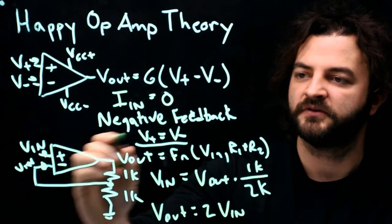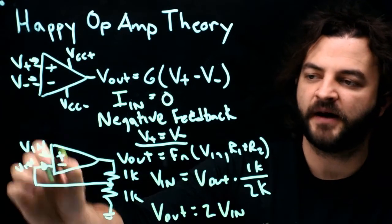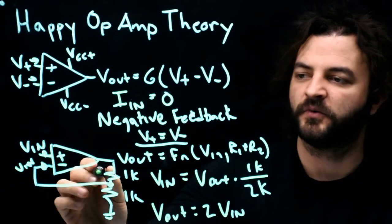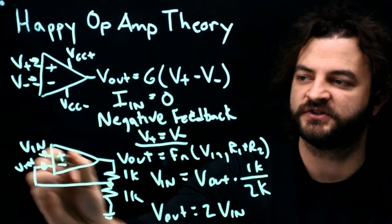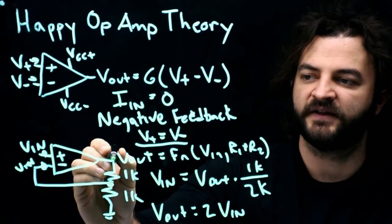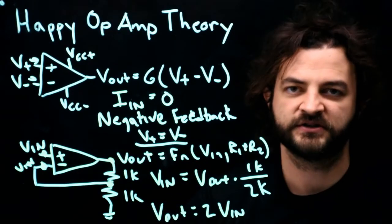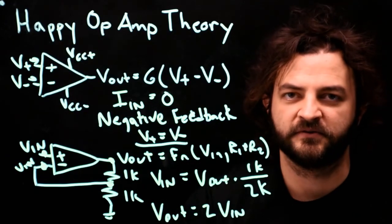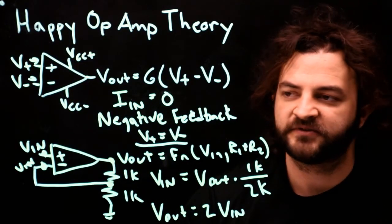We've applied our rule for it. The op-amp will be happy when these two voltages are equal. We're able to know what this voltage is based on what this voltage is, and then we can solve using the voltage divider equation. Happy op-amp theory can be used to evaluate a variety of op-amp circuits.